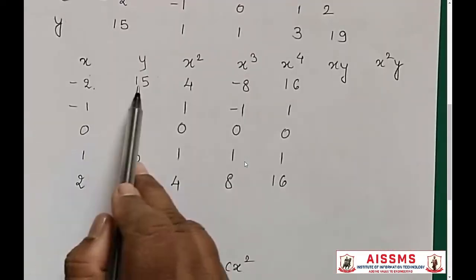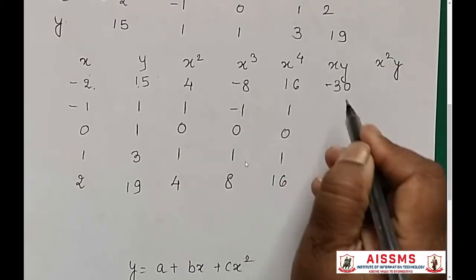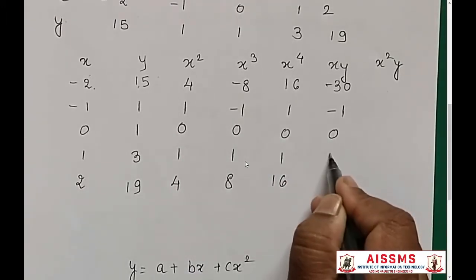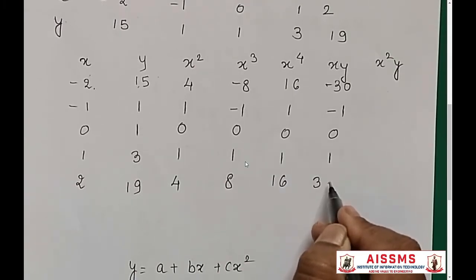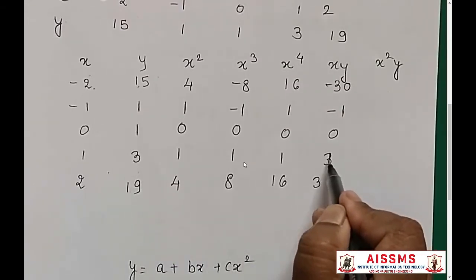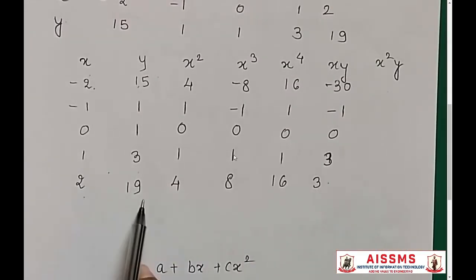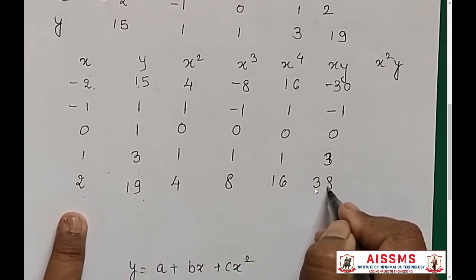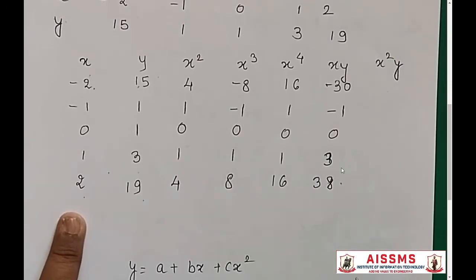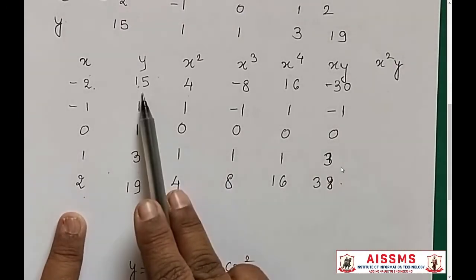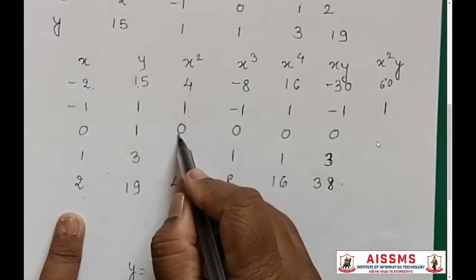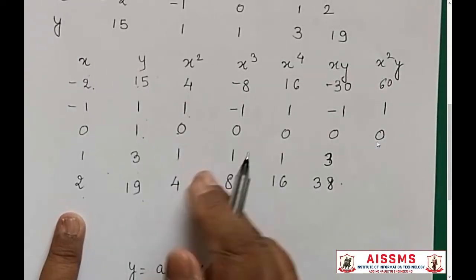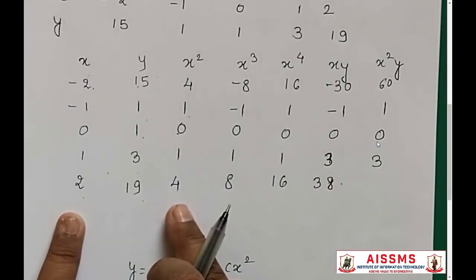xy: minus 2 times 15 is minus 30, minus 1 times 1 is minus 1, 0, 1 times 3 is 3, and 2 times 19 is 38. Then you have x²y: 4 times 15 is 60, 1 times 1 is 1, 0 times 1 is 0, 1 times 3 is 3, and 4 times 19 is 76.